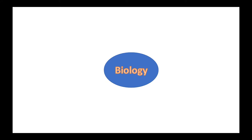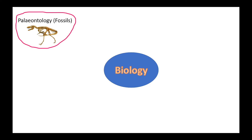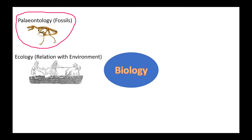Branches of biology. Paleontology is the branch of science that concerns with the study of fossils of animals and plants. Ecology is the branch of biology that studies the interactions among organisms and their biophysical environment, which includes both biotic and abiotic components.